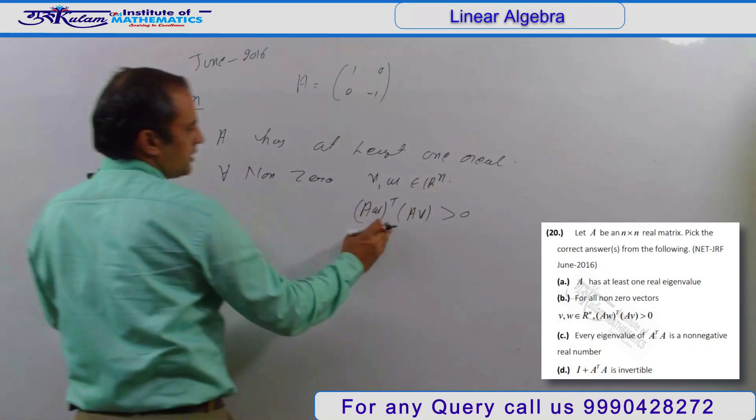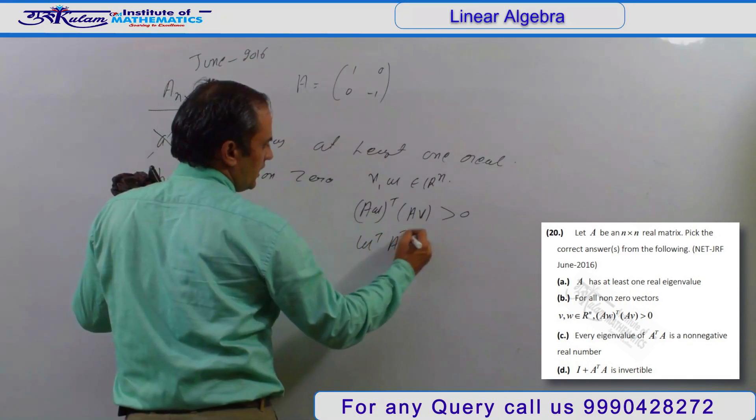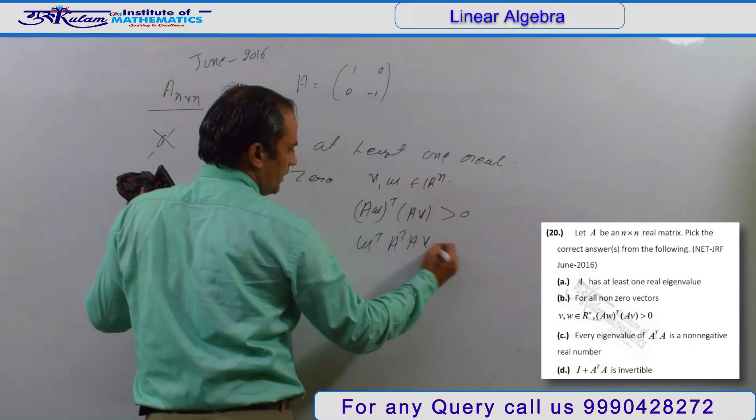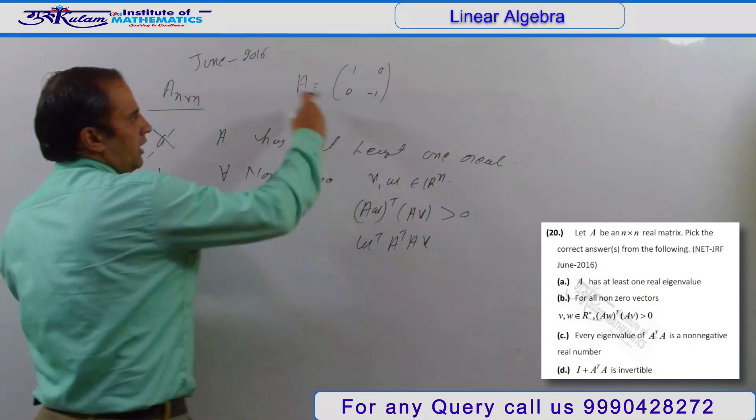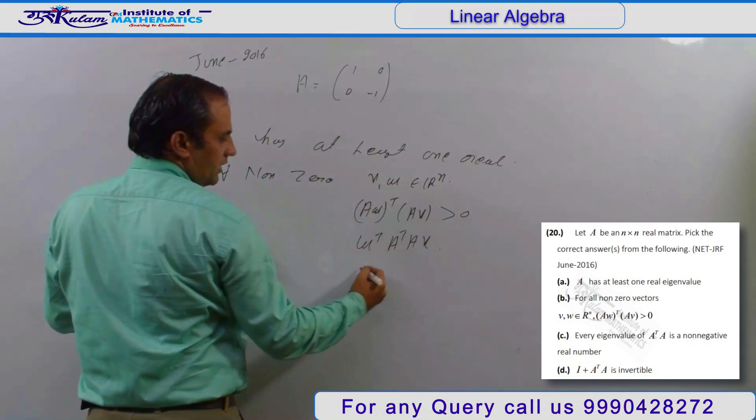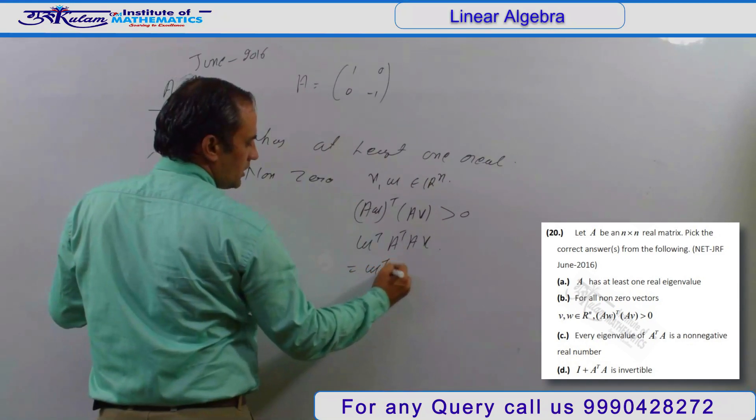This quantity becomes W transpose A transpose A of V. If I do A times A transpose, that gives identity matrix, so this becomes W transpose V.